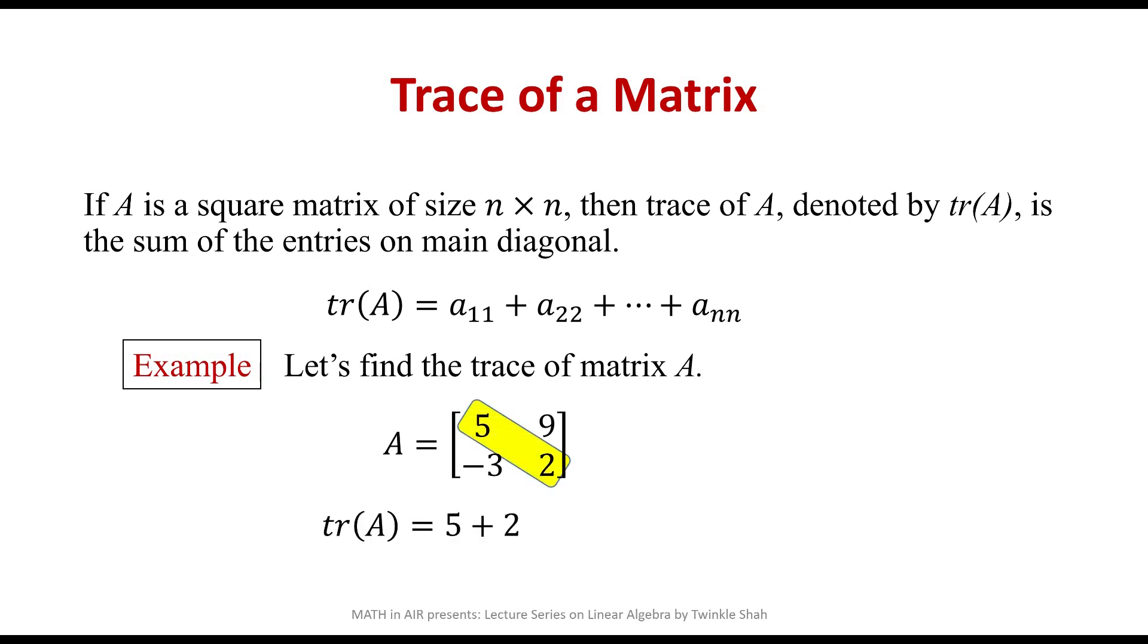These elements are 5 and 2. Therefore, trace of matrix A equals 7. That's the answer. Remember, note that trace of a matrix is not defined for non-square matrices.